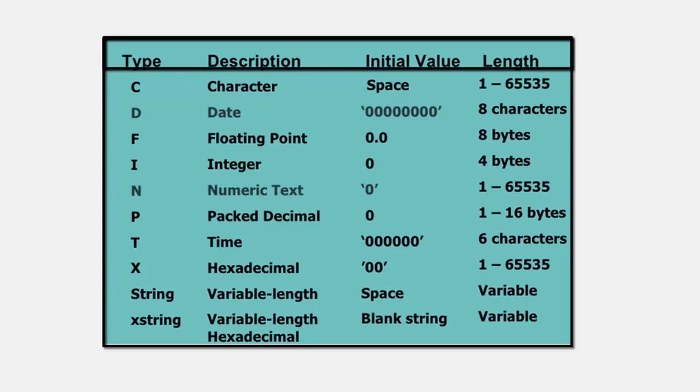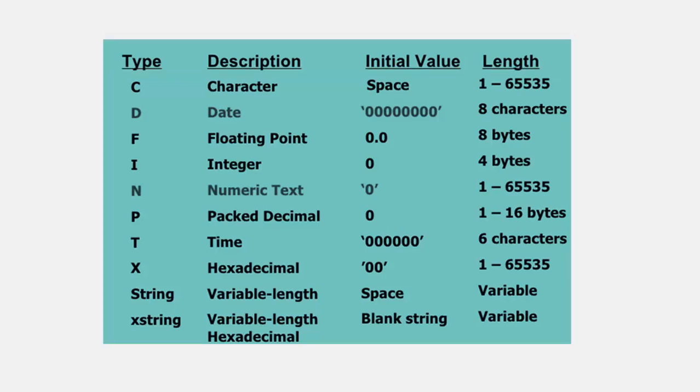String and XString variables can store a maximum of 255 characters, from 0 to 255. In the next class we will take each and every declaration, place it into our program, and debug it to see how it behaves in the backend and how values are stored. That's all for this class — thank you.